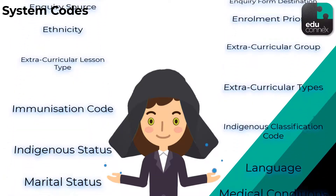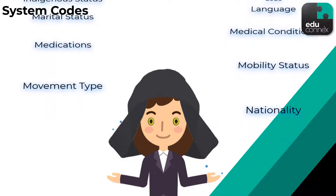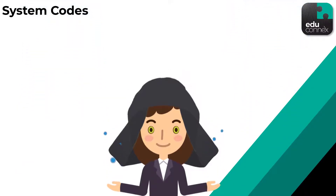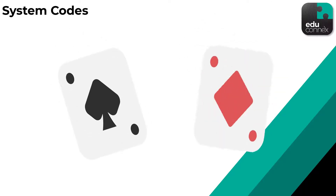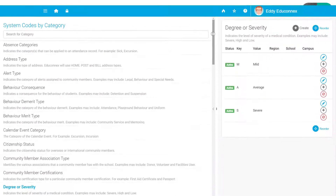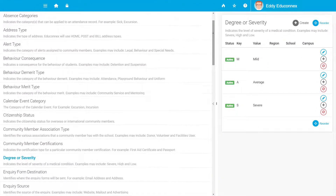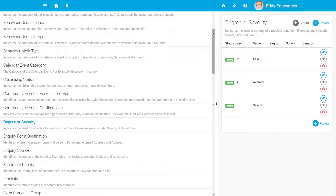From alert types and absence categories to behaviour consequences, transport methods and much more, EduConnex lets you call a spade a spade and a diamond a doorbell if you feel so inclined. There are around 50 different system code categories you can customise to match your school's preferences.